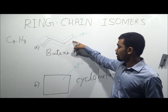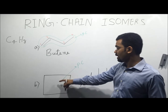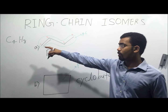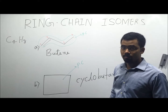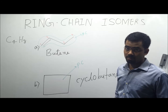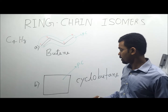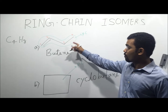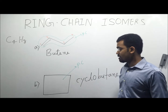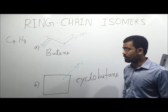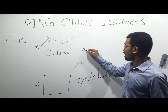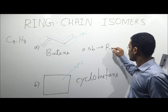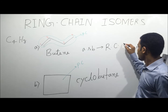In one molecule, the open chain is the parent chain, and the other molecule has a closed chain as the parent chain. Therefore A and B both have the same molecular formula C4H8, but both have different connectivity. Therefore both are structural isomers, and since one has an open chain and the other has a closed chain as parent chain, A and B are considered ring chain isomers.